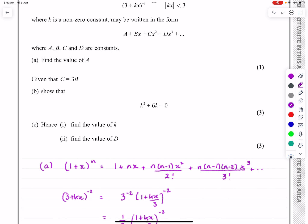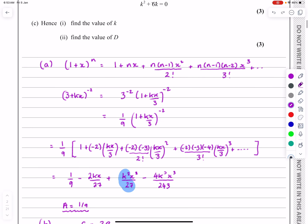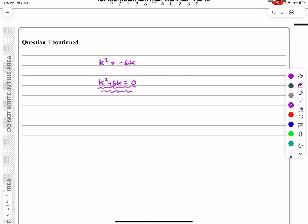Part C says, can we find the value of k? And then once we've found the value of k, can we find the value of d? Okay, value of k, yeah, no problems with that. It's just solving this equation. So this is part C. Solving this equation.